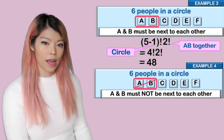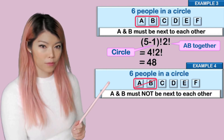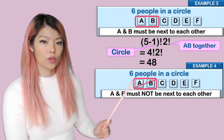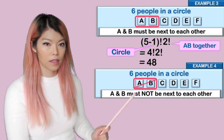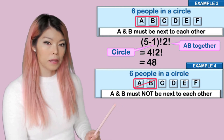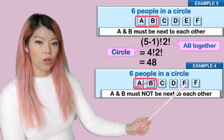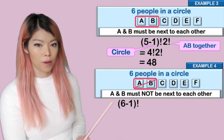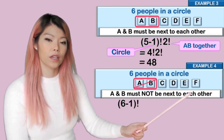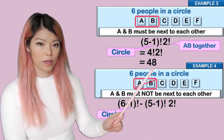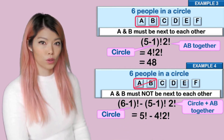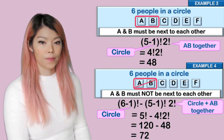Example four: what if we had six people and A and B don't like each other and must stay away from each other? The concept is: all arrangements minus arrangements where they are together gives us arrangements where A and B are not together. All arrangements of six objects in a circle is (6 − 1) factorial. Together, treating them as a group, gives (5 − 1) factorial times two factorial. Evaluating: five factorial minus four factorial times two factorial, which is 72.